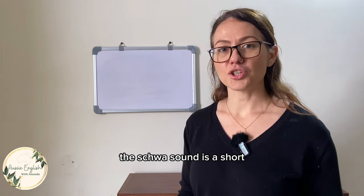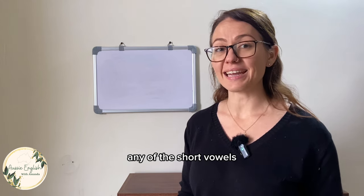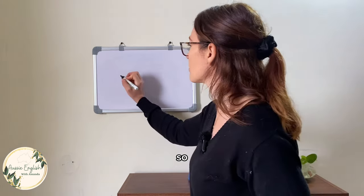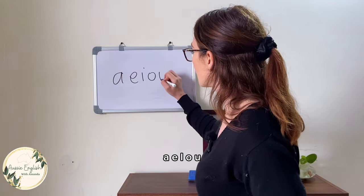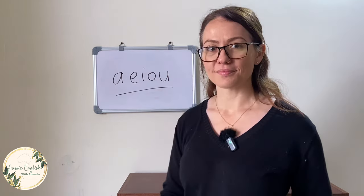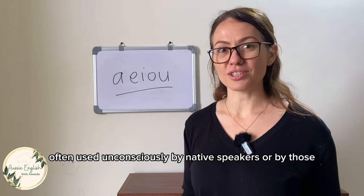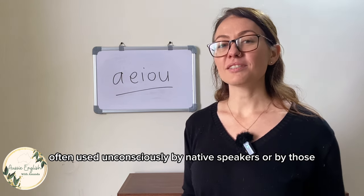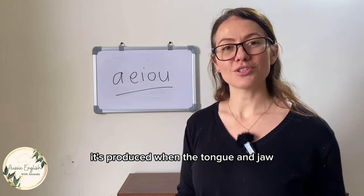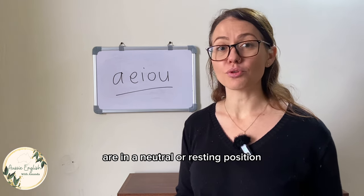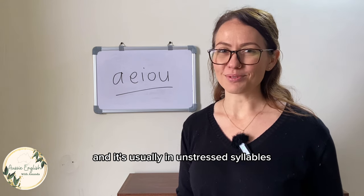The schwa sound is a short interchangeable vowel sound that can replace any of the short vowels — A, E, I, O, U. It's a relaxed neutral sound often used unconsciously by native speakers or by those comfortable in their own accent or dialect. It's produced when the tongue and jaw are in a neutral or resting position, and it's usually in unstressed syllables.